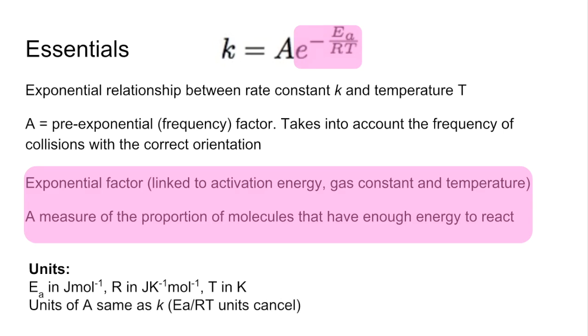So the units of A are going to be the same as the units of K, the rate constant, and that's because the units of the Ea over RT all cancel out.